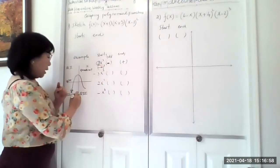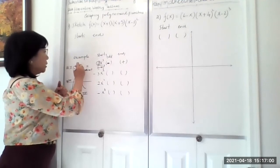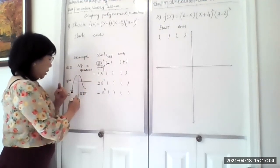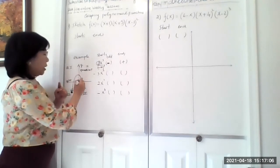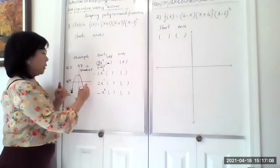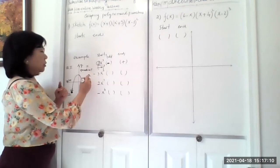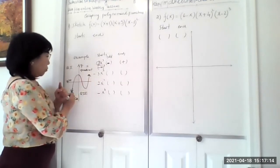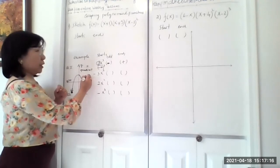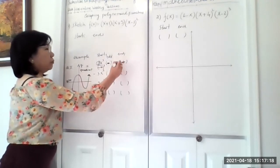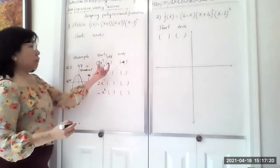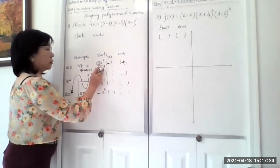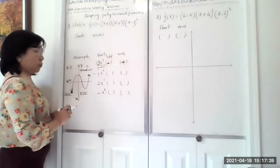So if our function starts from quadrant 3 — meaning y is negative infinity — it goes up, crosses the x-axis, then ends with the other end behavior going up into quadrant 1. For an odd function, the direction of the end behaviors is opposite: one up, one down, or one down, one up. So I put the positive side here for the odd function.